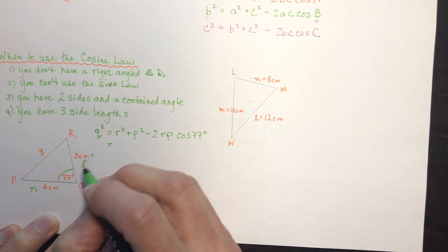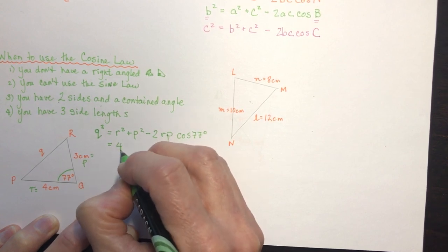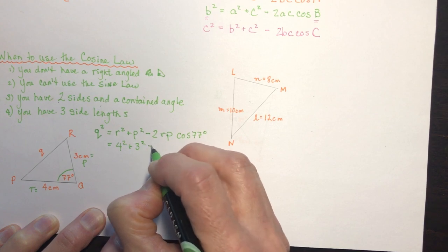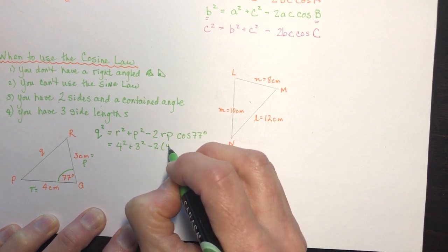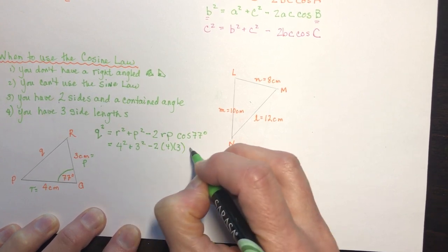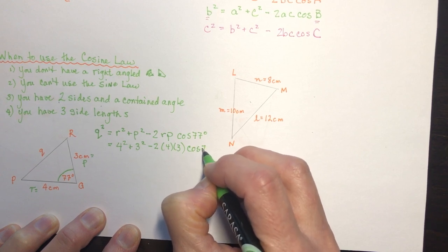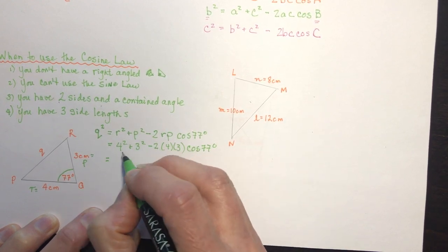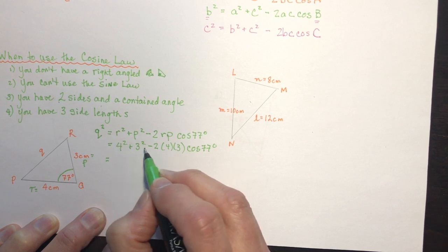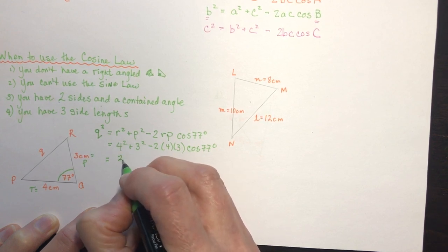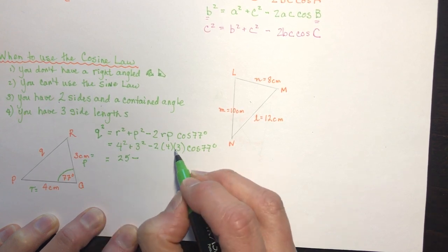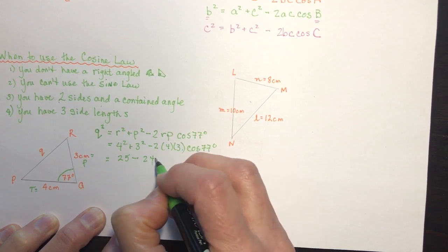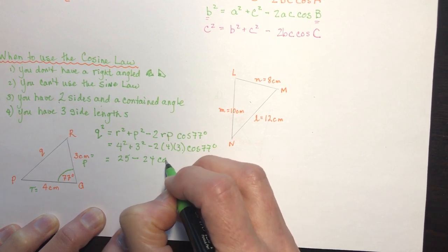Plugging in the values: r is 4, p is 3. So q squared equals 4 squared plus 3 squared minus 2 times 4 times 3 times cosine of 77 degrees. That's 16 plus 9 minus 24 cosine 77 degrees.